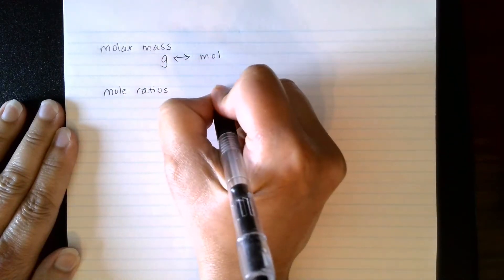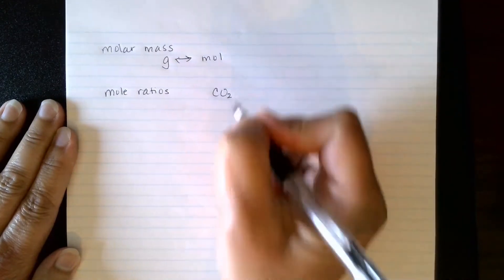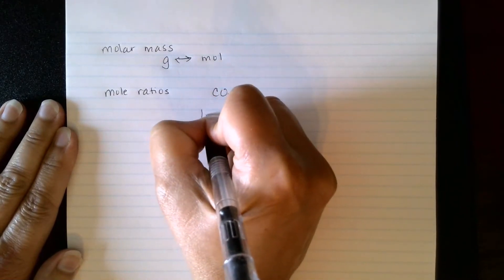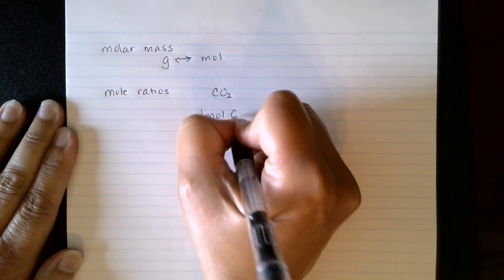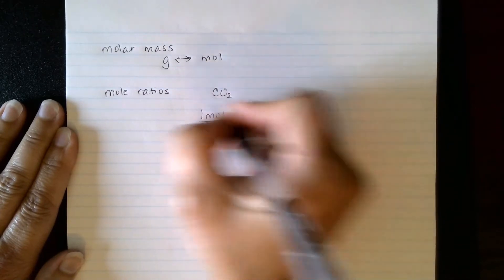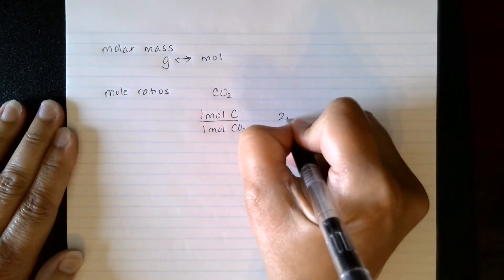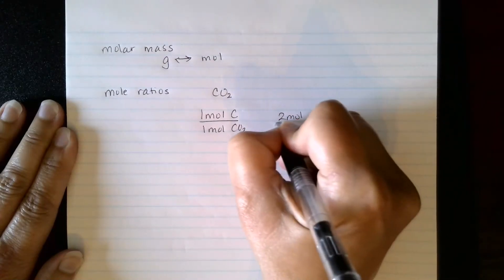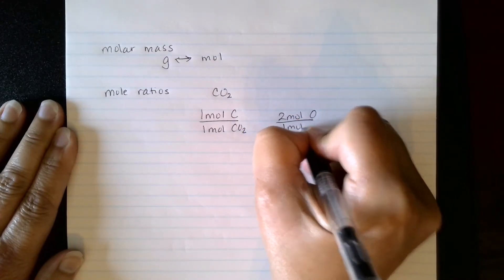For example, if we were looking at CO2, we would know that there is one mole of carbon for every one mole of CO2, or there would be two moles of oxygen for every one mole of CO2.